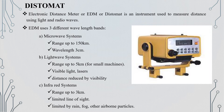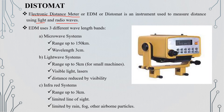Next, we will look at the distomat. The distomat is the Electronic Distance Meter, abbreviated as EDM. We use one light ray and radio waves for measurement. There are three different wavelength bands. The first is the microwave range with a width of up to 150 km and a wavelength of about 3 meters.